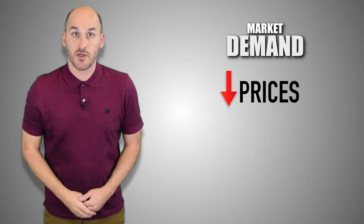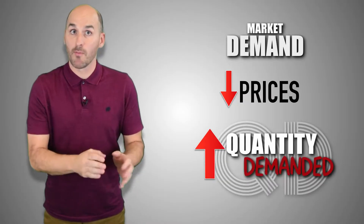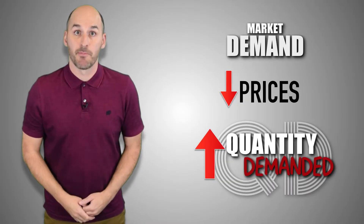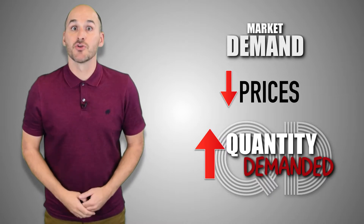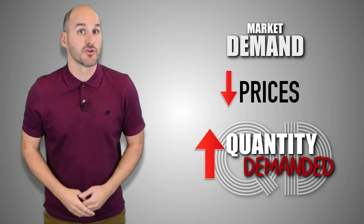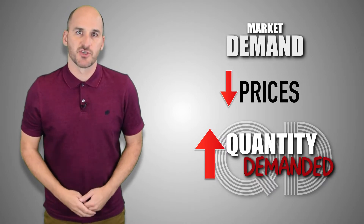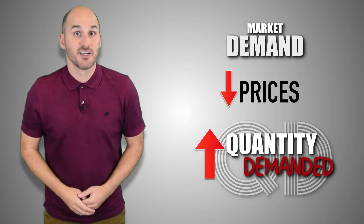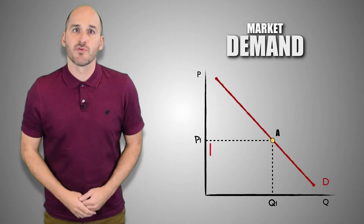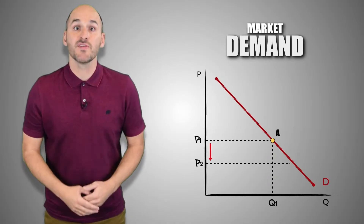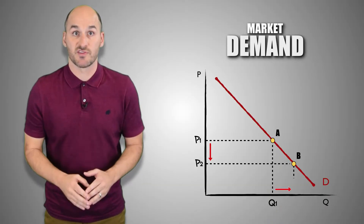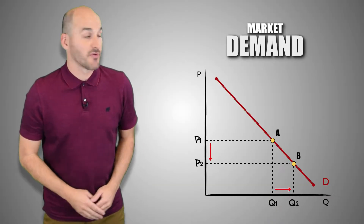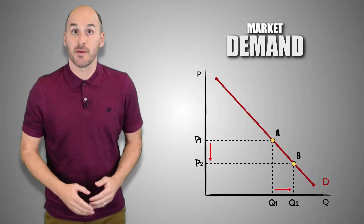As a result, when product prices fall in the market, consumers are either more willing or more able to demand a greater quantity of output. Although each additional unit provides less and less marginal utility, the price of each additional good is less expensive, and so to the consumer it's worth buying additional units. A decrease in price level in the market causes an increase in quantity demanded, and a movement along the demand curve from point A to point B.